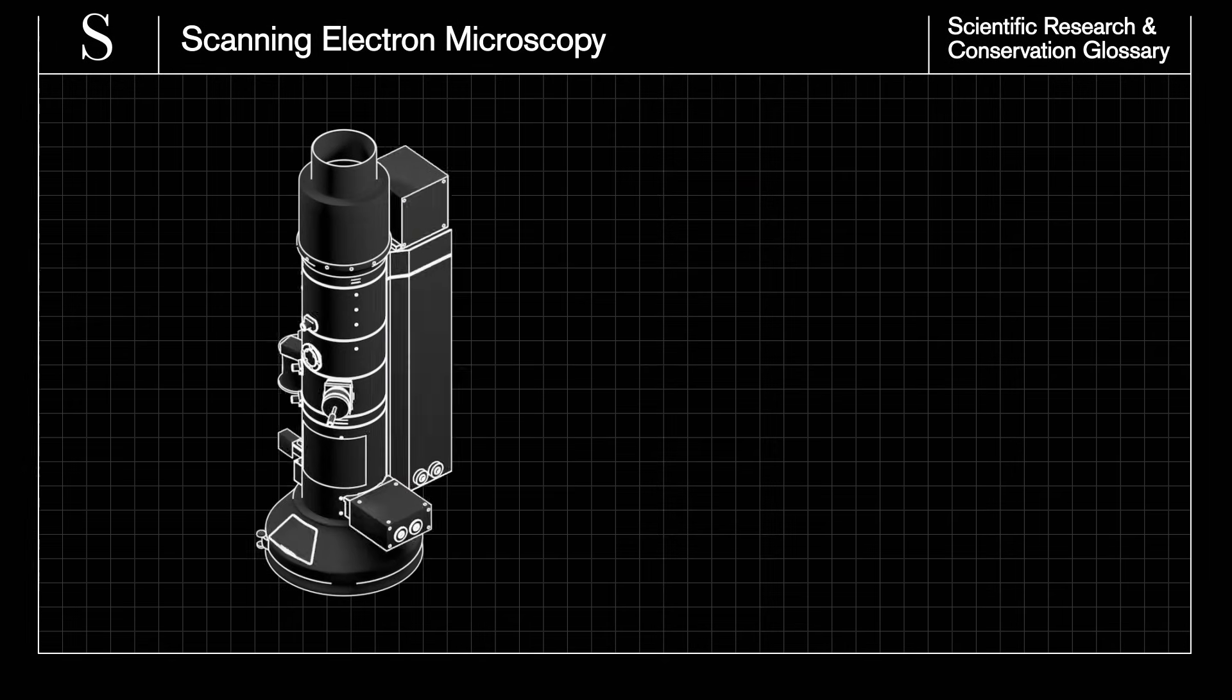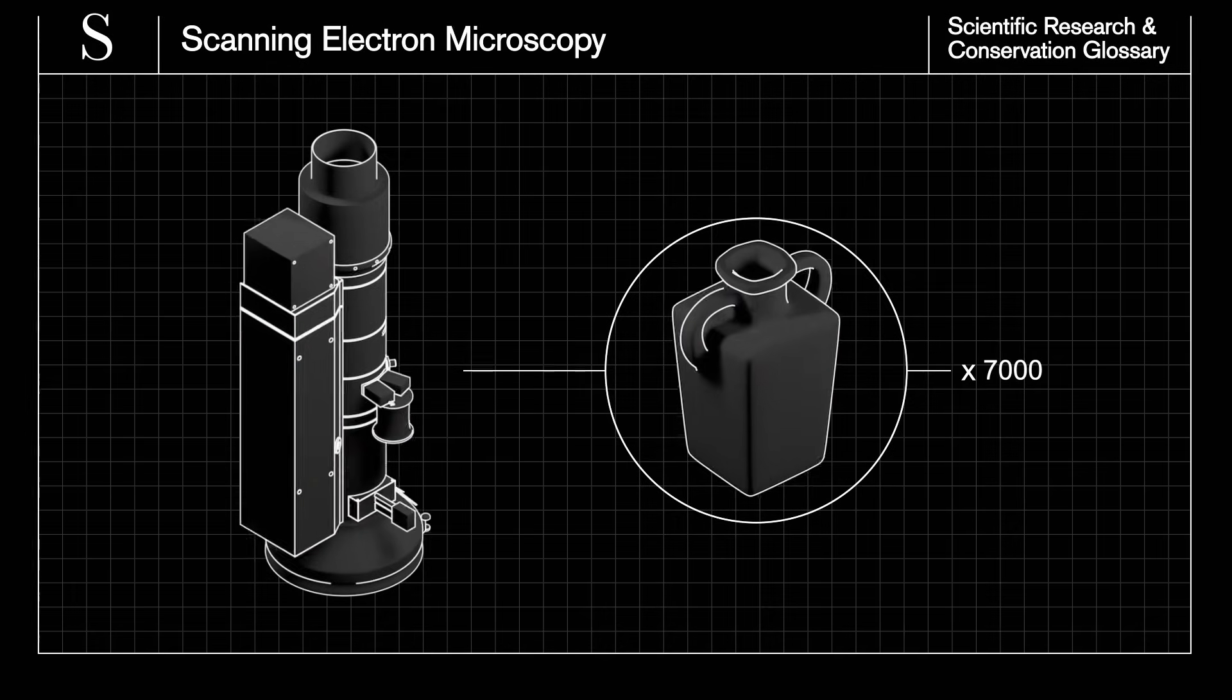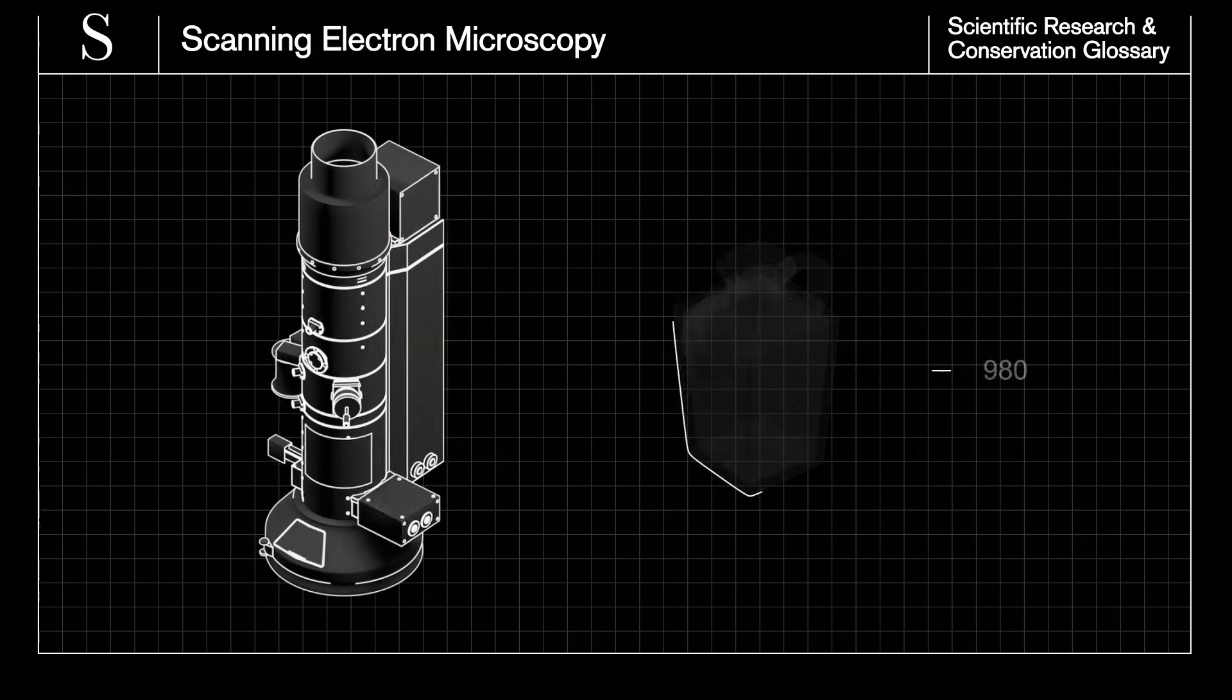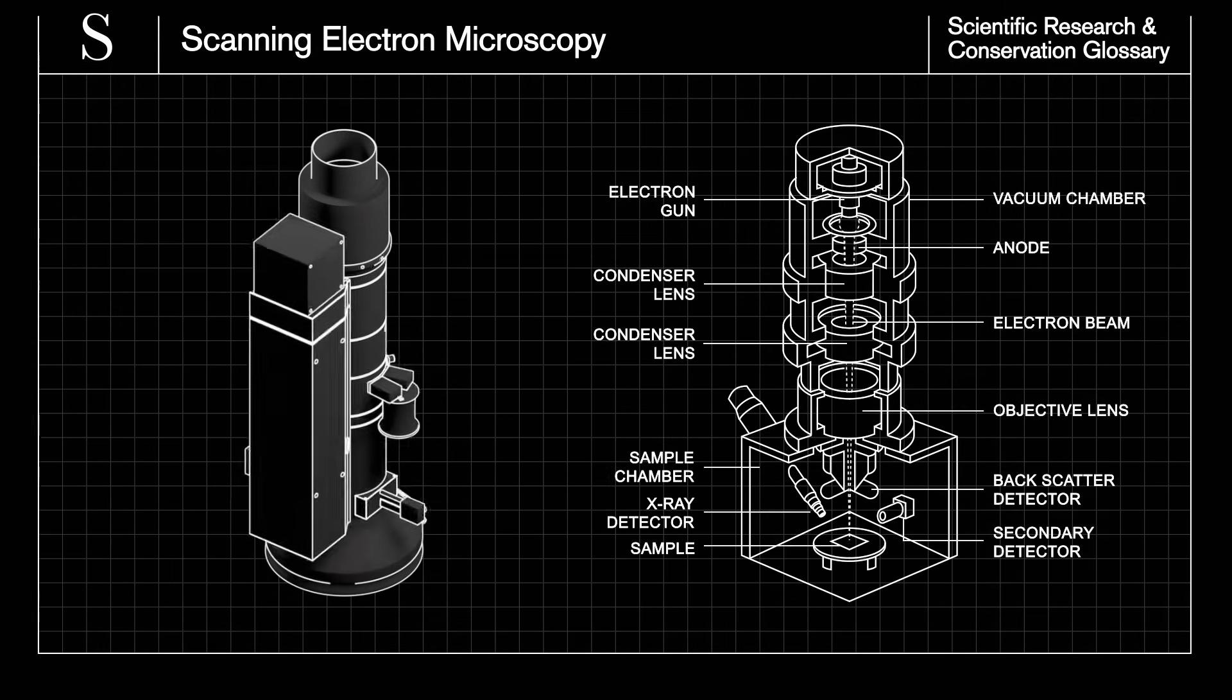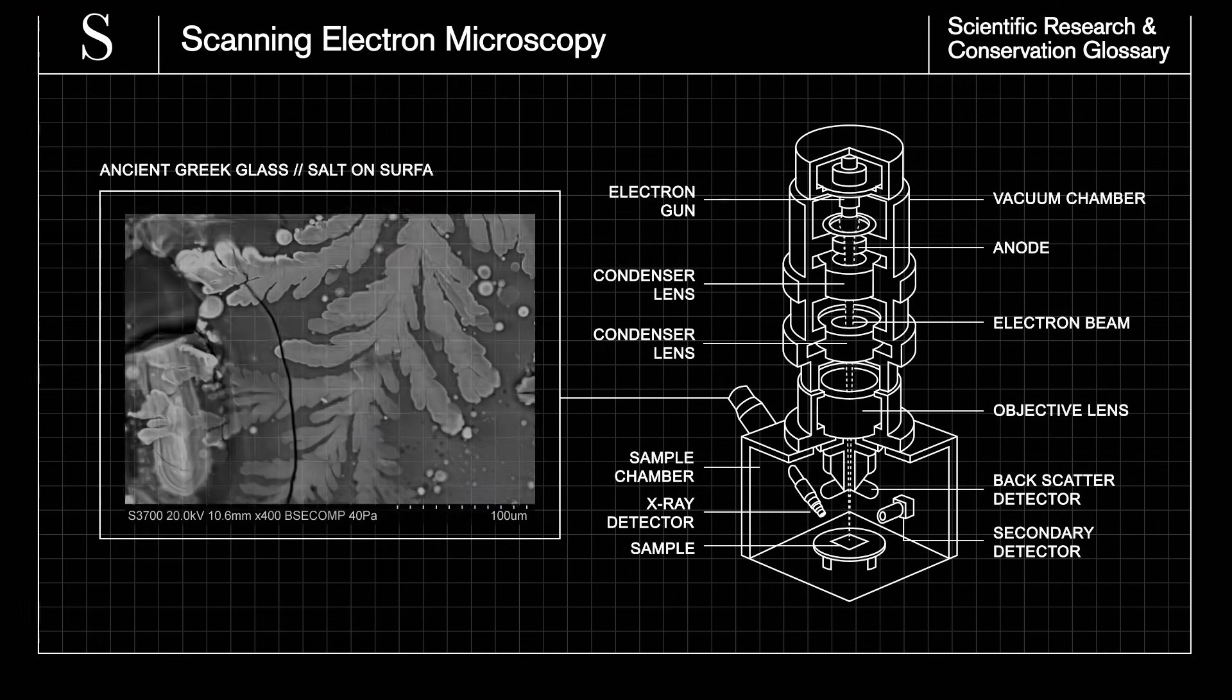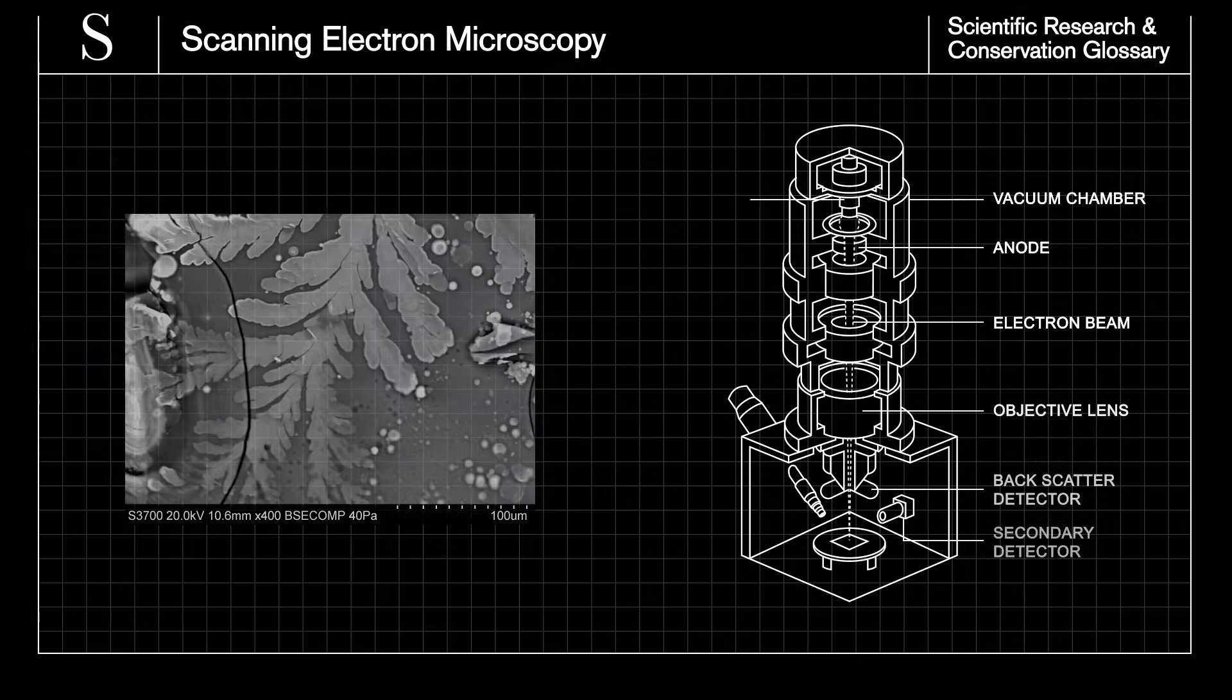Scanning electron microscopy is used to study objects at magnifications up to several thousand times, which is much higher than with light microscopes. The object is viewed by scanning a beam of electrons onto the surface and collecting the signals. These are used to produce a clear image, which appears in shades of grey for surfaces as small as one nanometer.